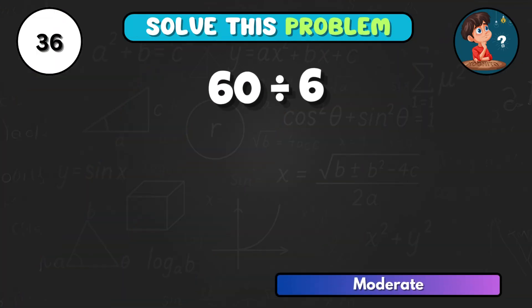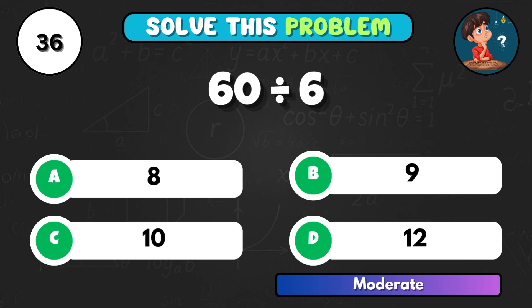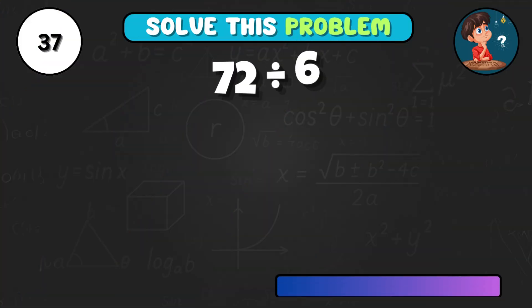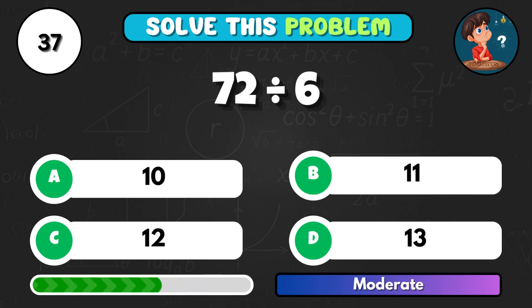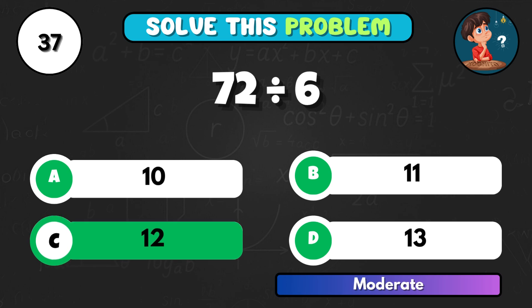60 divided by 6, how much do you get? Option C equals 10. And 72 divided by 6, what's your final answer? Correct letter C equals 12.